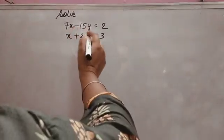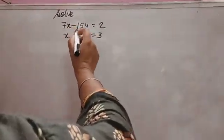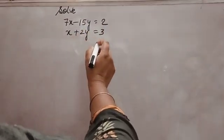Dear students, see one more question. 7x minus 15y is equal to 2. x plus 2y is equal to 3.